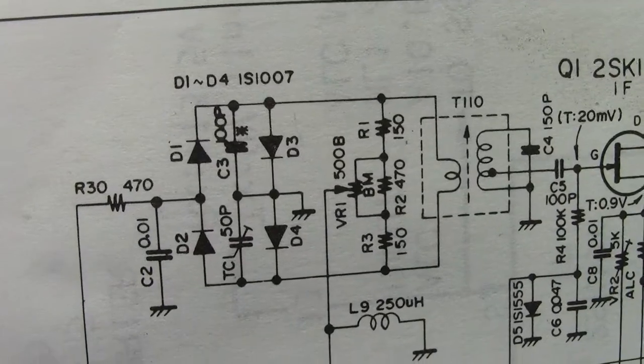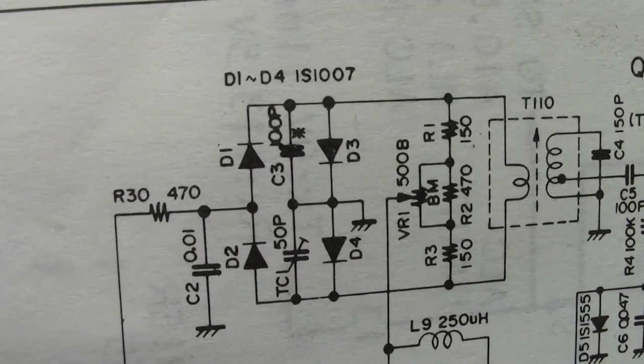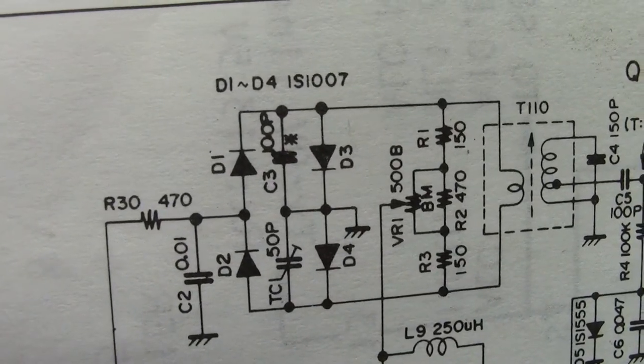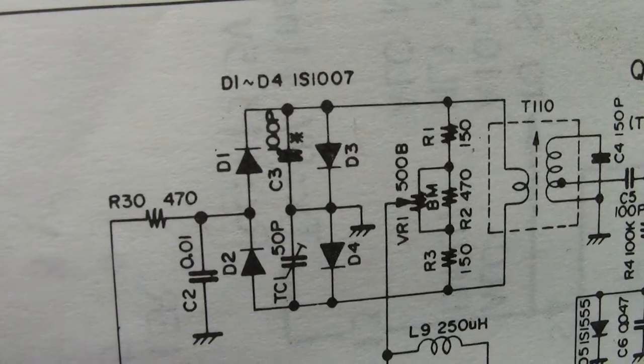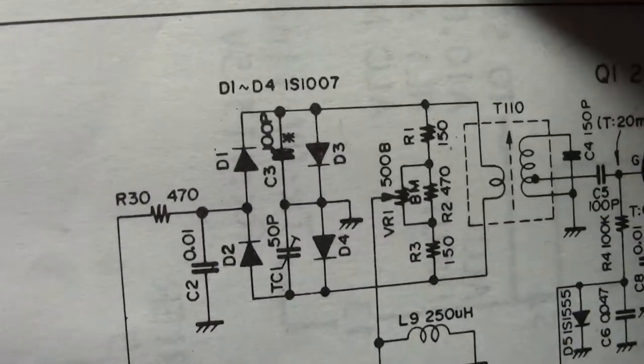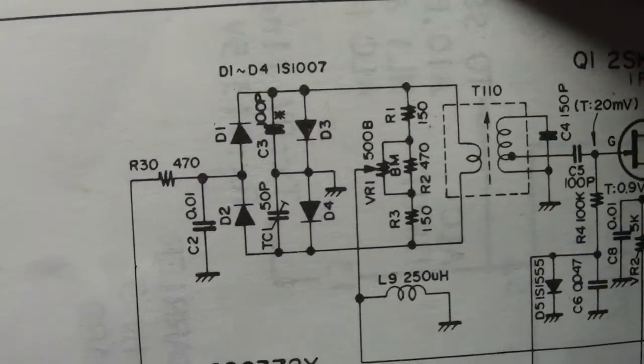What you do is you adjust VR1 and VC1 right on the top of that board that I talked about before, the 1184 modulator unit. And you work those two controls until you null out the signal. And that should eliminate your problem.